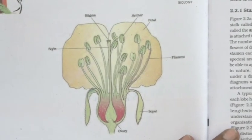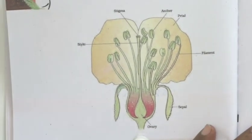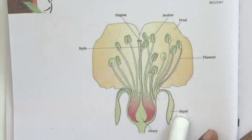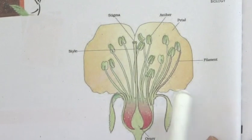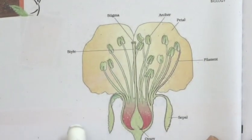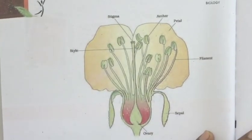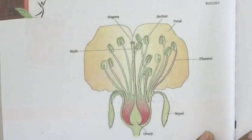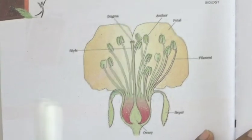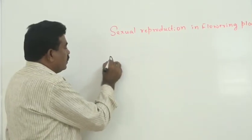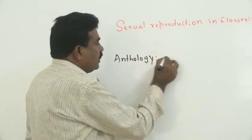In the figure, we have a longitudinal section (L.S.) of a flower. This flower diagram shows sepals as units of calyx, petals as units of corolla, stamens as units of androecium, and ovary, style, and stigma together forming carpels as units of gynoecium. This is a common sketch-and-label exam question. The study of flowers is called anthology.